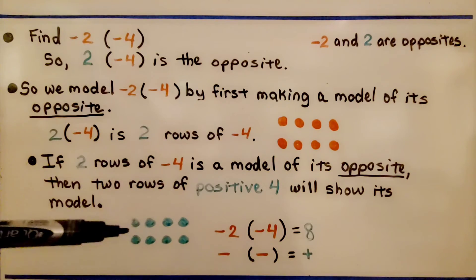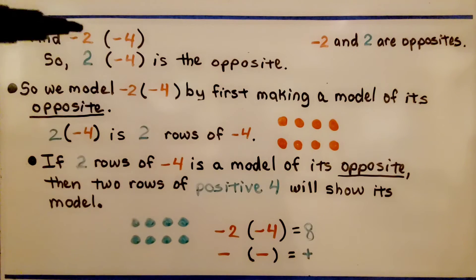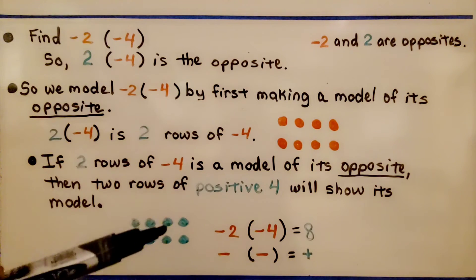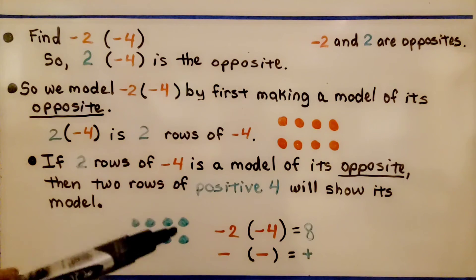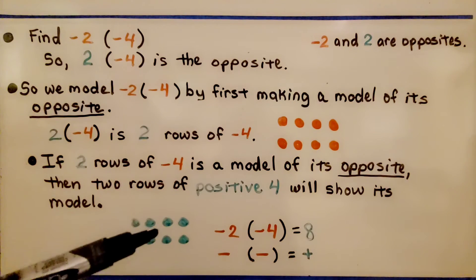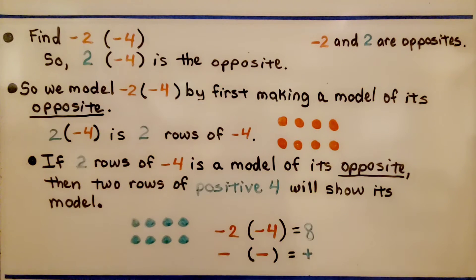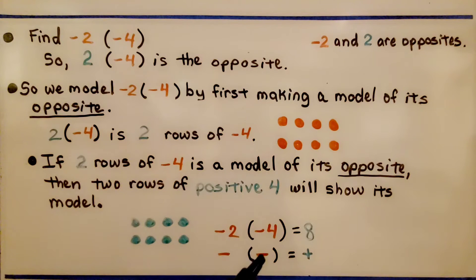So now we want to go back to the original. That means we're going to have 8 positive counters. So negative 2 times negative 4 is equal to positive 8 — they have like signs, and a negative times a negative equals a positive. If that's still confusing, try going back a couple of minutes and watching it again.